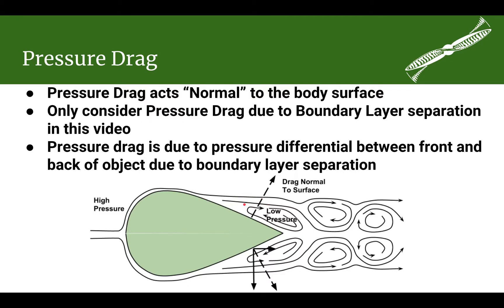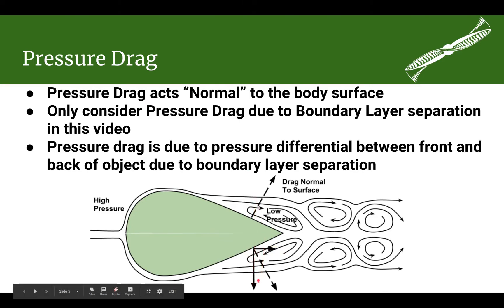Pressure drag is due to the difference in pressure — high pressure in front and low pressure behind — which pulls the object back. The pressure acts normal to the surface, so there's a small lift component. But the same pressure drag occurs on the bottom as well, so the vertical components cancel out and the backward components add together, giving us our net pressure drag pulling rearward.